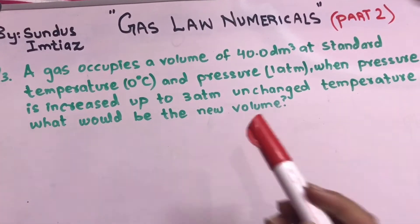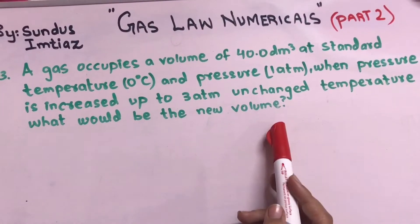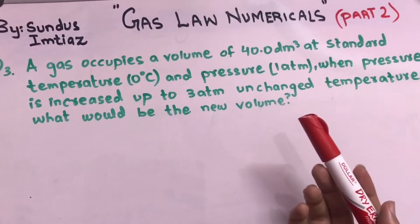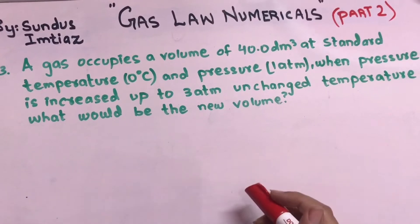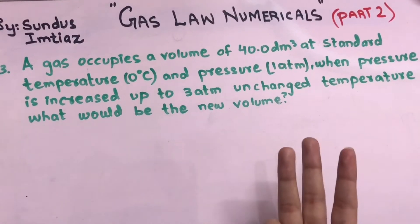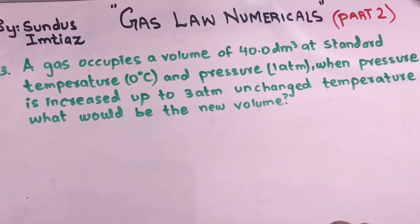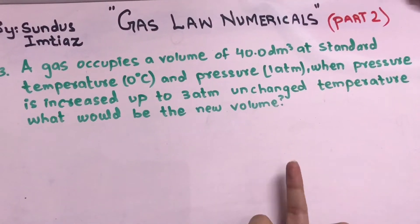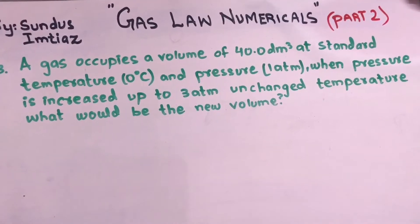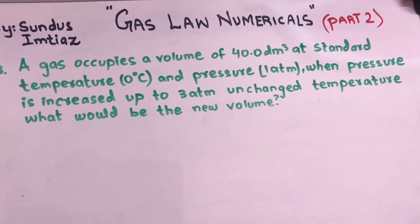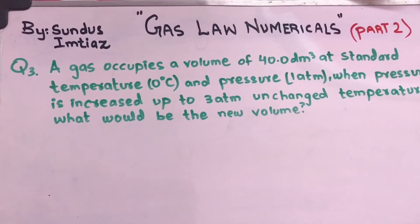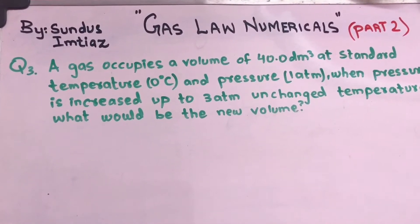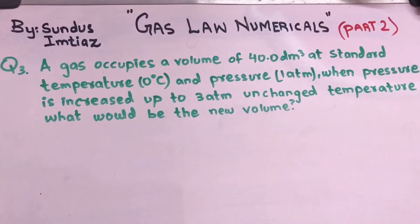Assalamu alaikum all the students. As I have uploaded part 1 of this video before, now I'm going to continue the part 2 in which I am going to solve the three numericals that are remaining in the last video. These numericals are taken from class 9th chemistry, physical states of matter chapter, section D. So let's get start solving these numericals. If you haven't checked that video, go and check the link in the description box.